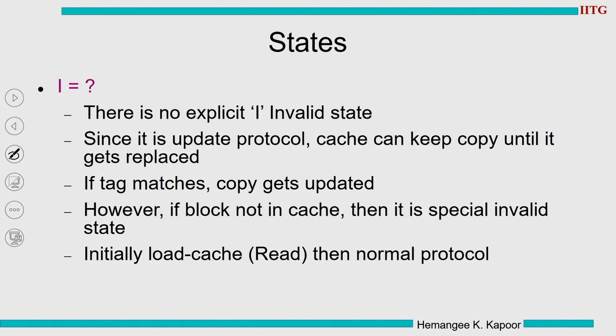There is an implicit invalid state, but we do not explicitly list it here. This is because it is an update-based protocol — we do not invalidate others, so we cannot force a cache into the I state. There is no formal I state. Other caches may or may not have a copy, but whenever a tag matches and an updated word is on the bus, the copy gets updated.